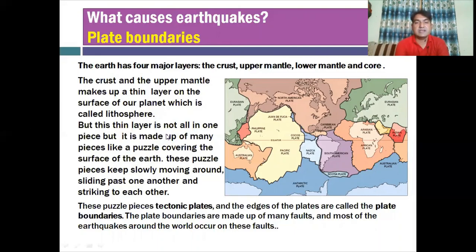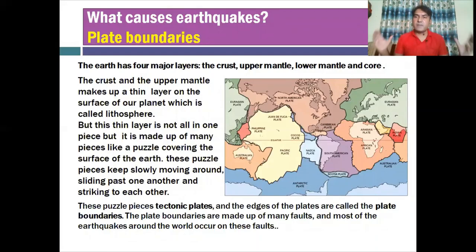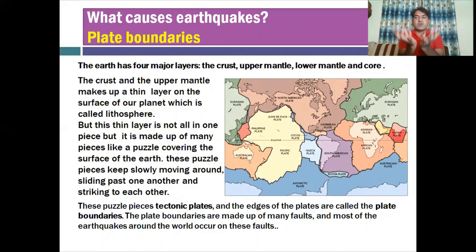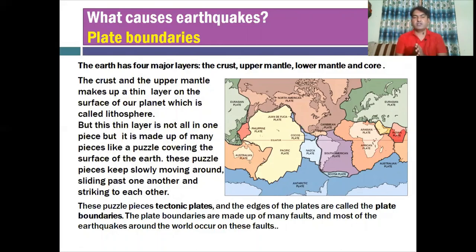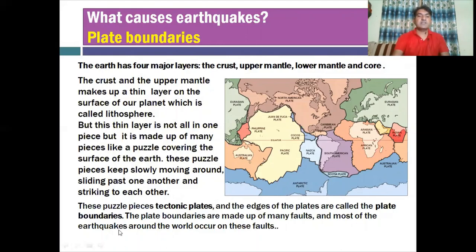This thin layer is not all in one piece — it is made of many pieces like puzzles covering the surface of the Earth. These puzzle pieces keep slowly moving around, sliding past one another and striking each other. The lithosphere is not uniform everywhere; it is based on different pieces. Once we combine those pieces, it gives the shape of one landmass. These pieces of lithosphere are comprised of tectonic plates.